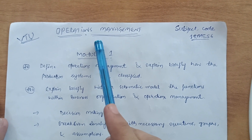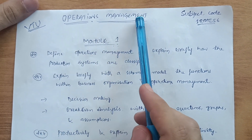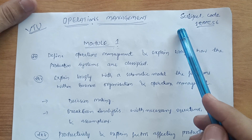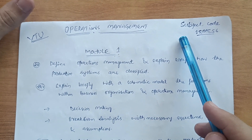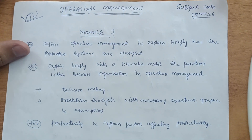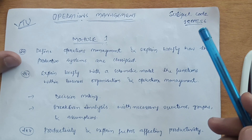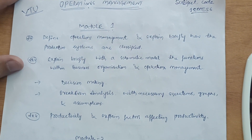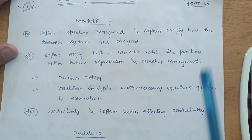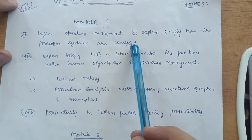Hello friends, welcome back to my YouTube channel. Today I want to discuss the most important questions of the Operations Management subject, which is the fifth semester subject with subject code 18ME56. It is a theoretical subject, but sometimes the exam asks problems as well — some are simpler and some are difficult. So you have to focus on the theoretical concepts and the theory portion so that it will be easy for you to pass the subject.